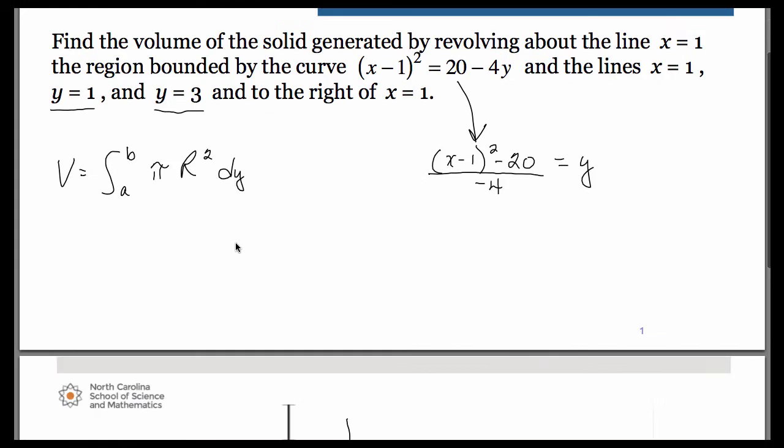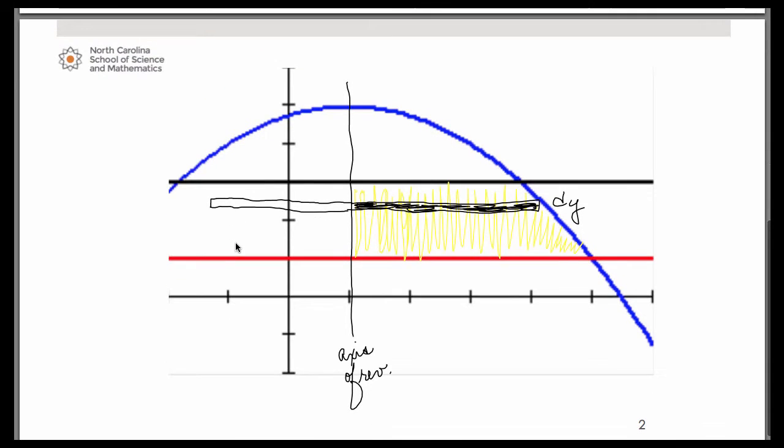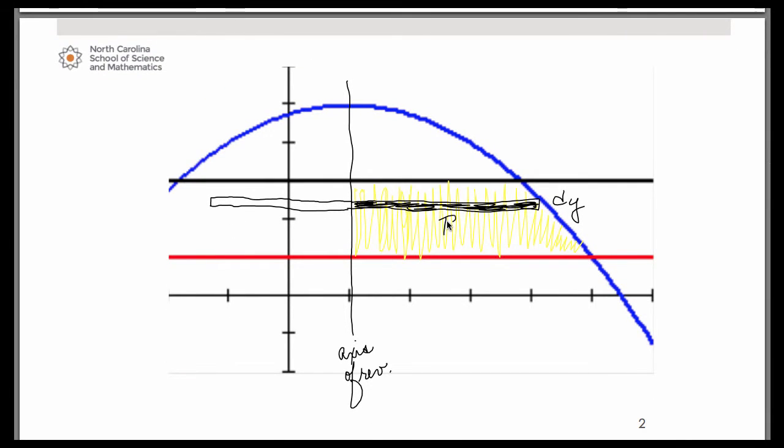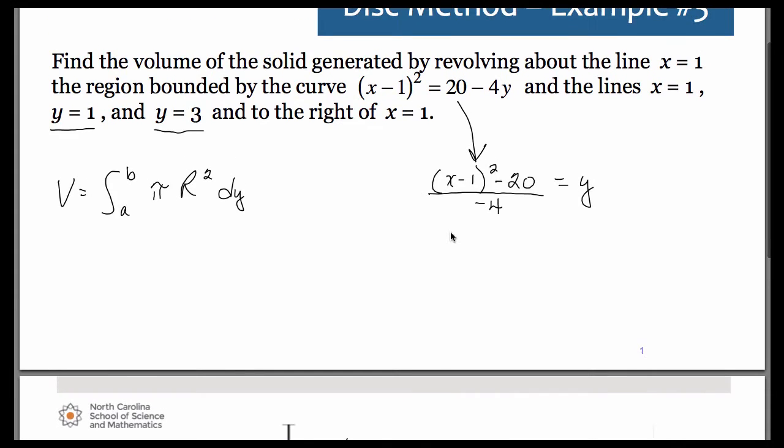Now because of the way our representative rectangle is oriented, our radius is essentially the length of the rectangle from left to right. So we need to do right minus left in order to get the length of that rectangle. So on the right side, it's hitting the parabola. So let's go ahead and start writing this out. So our r value, our radius, on the right side, it's hitting the quantity √(20 - 4y) + 1.